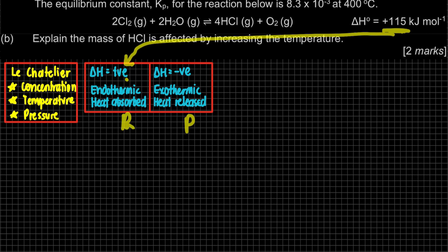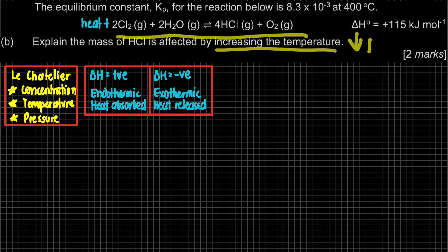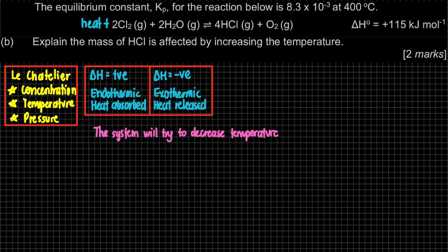Now we need to determine the counteraction of the system. By increasing the temperature, the system will try to re-establish equilibrium by counteracting — that is, by decreasing the temperature. Using an analogy: think of the hot side as 'Labuan' and the cold side as 'Kundasang.' The system wants to move to the cold side to decrease temperature. So the equilibrium position will shift to the right.